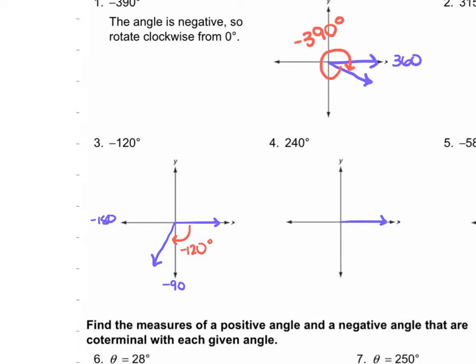For number 4, we have 240 degrees, so we start that initial side on the positive x-axis. We're going to go up and around — so this is 90 degrees, this is 180, this is 270 — so 240 is going to be about here. Then our circular arrow goes up and around.